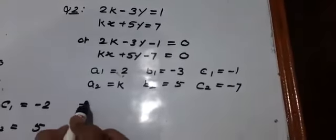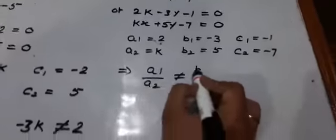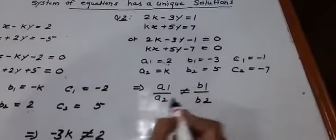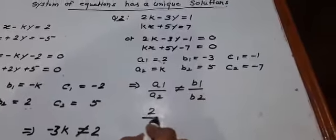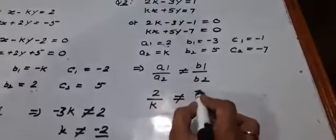Now according to the formula for unique solution, a1 upon a2 not equal to b1 upon b2. a1 is 2, a2 is k, not equal to b1 is minus 3, and b2 is 5.